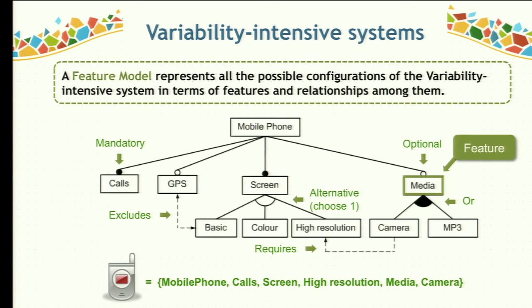There are also other kinds of hierarchical relationships like alternative or OR. In addition, feature models can contain cross-tree constraints usually presented in the form of requires and excludes. For example, in this feature model, if our mobile phone has a camera, the screen has to be high resolution because we have a requires constraint between camera and high resolution. Similarly, GPS and basic screen have an excludes constraint.